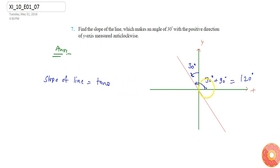So here θ is 120 degrees, so I can write tan(θ) equals tan(120°). So tan(120°) is nothing but tan(180° - 60°).